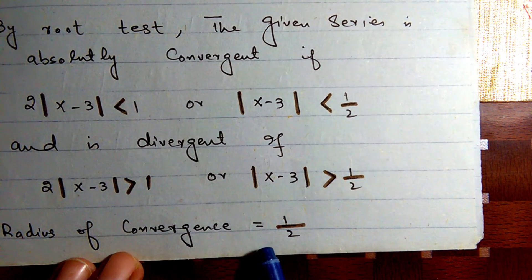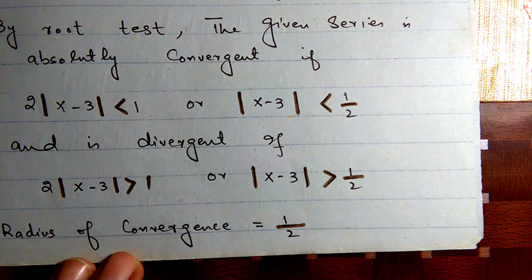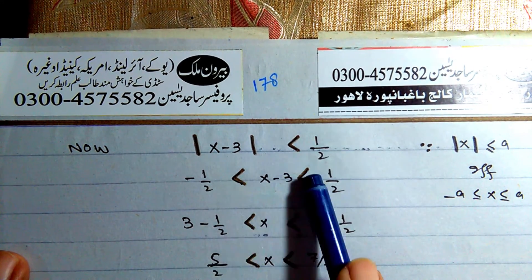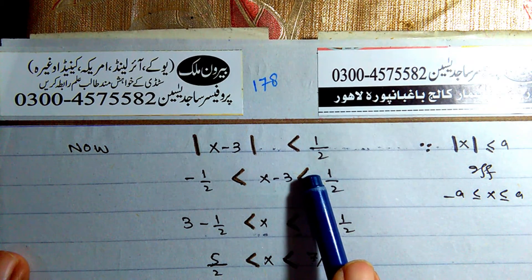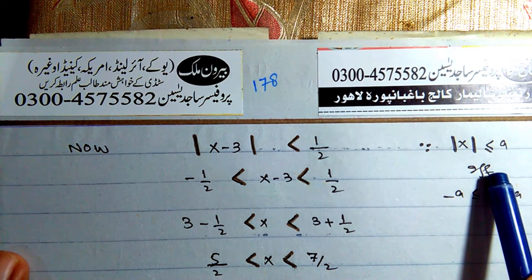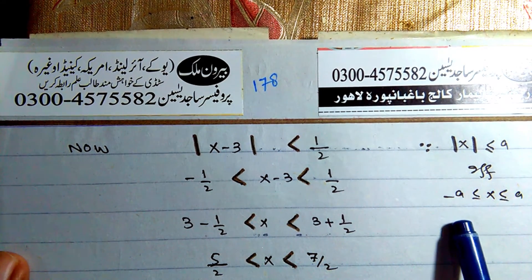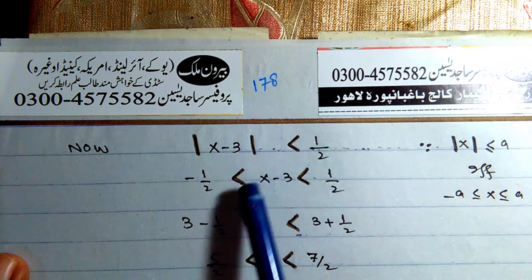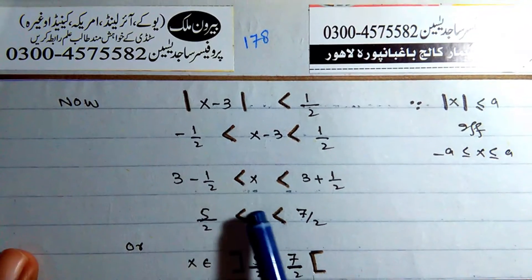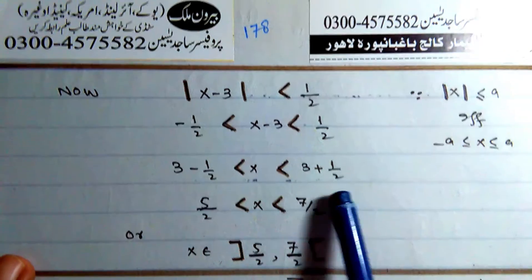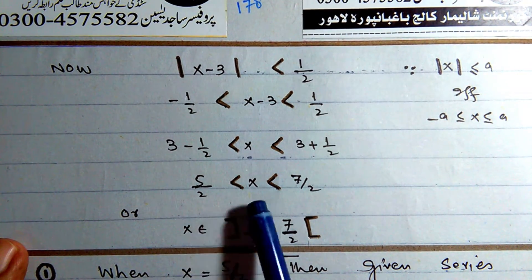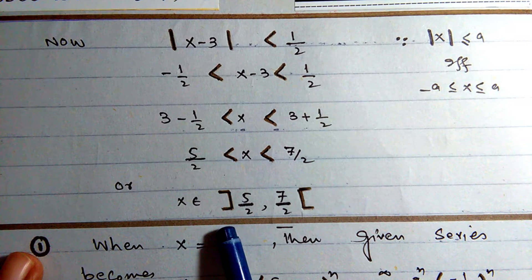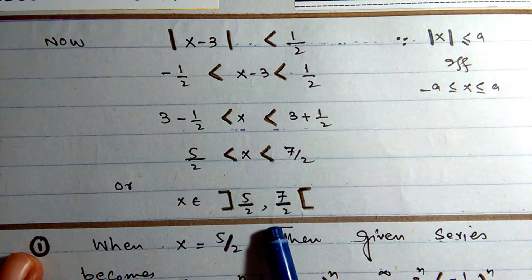Since |x-3| < 1/2 means -1/2 < x-3 < 1/2, adding 3 gives 5/2 < x < 7/2. We also write this as x belongs to the open interval (5/2, 7/2). We now check the endpoints x = 5/2 and x = 7/2.